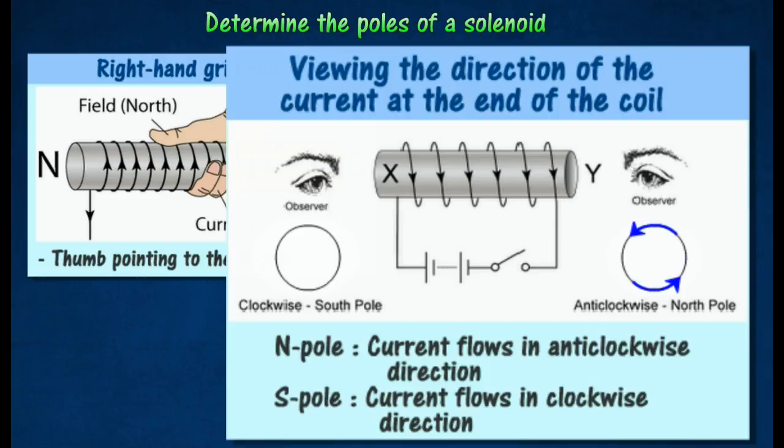The end in view will be the north pole if the current is flowing in an anti-clockwise direction. It will be the south pole if the current is flowing in a clockwise direction.